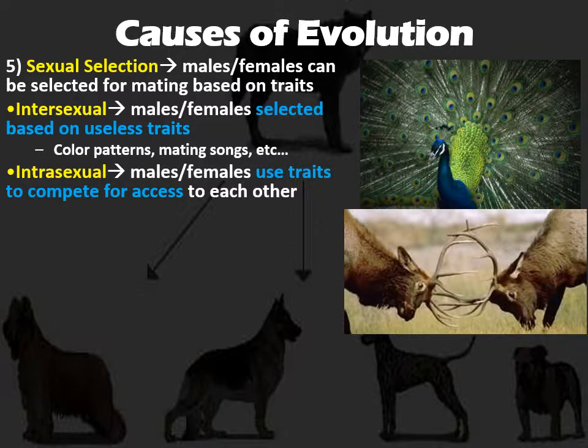We can also have intrasexual selection, where males and females use traits to compete for access to each other. For example, populations where males fight each other for access to a female. The horns and antlers of reindeer and elk are used partly for defense but also in the mating ritual — they fight each other and try to flip each other over using the antlers. Ultimately, the most impressive male is more likely to reproduce with the females. So tusks, horns, and body size are all examples of intrasexual traits.